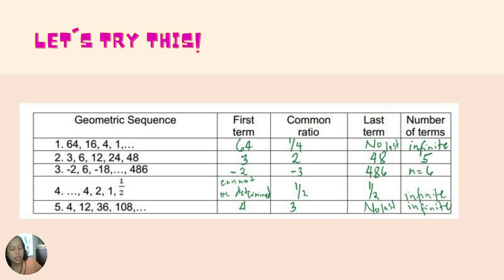For number four, the sequence has three dots then four, two, one, one-half. The first term cannot be determined, the common ratio is one-half, the last term is one-half, and the number of terms is infinite because we do not know how many terms come before four. For number five, the first term is four, the common ratio is three, there is no last term, and the number of terms is infinite.